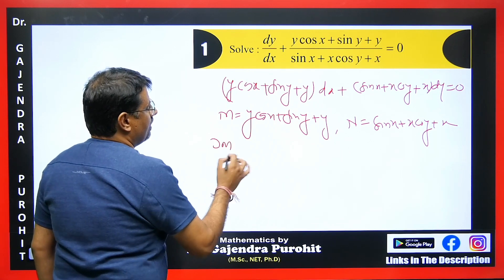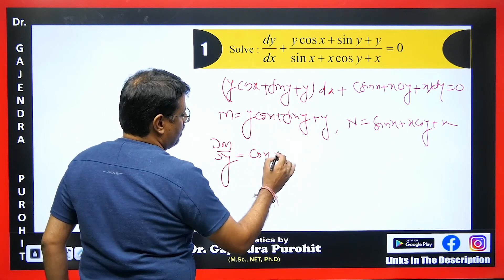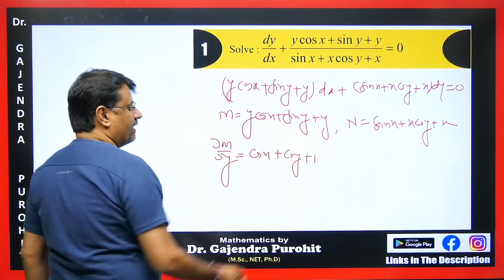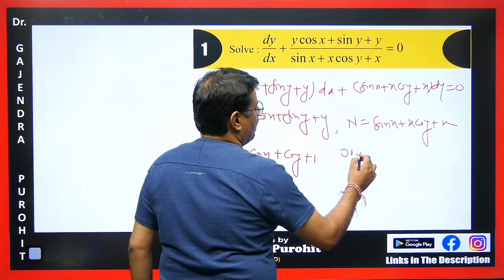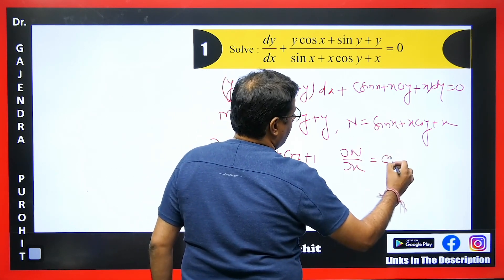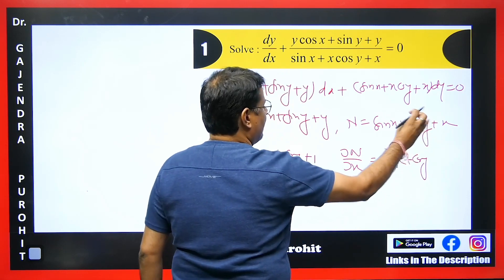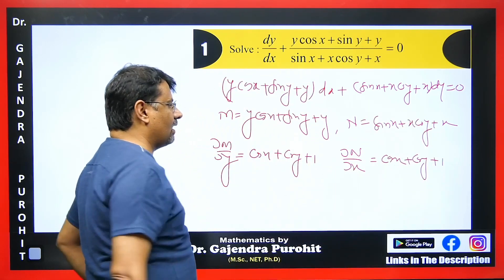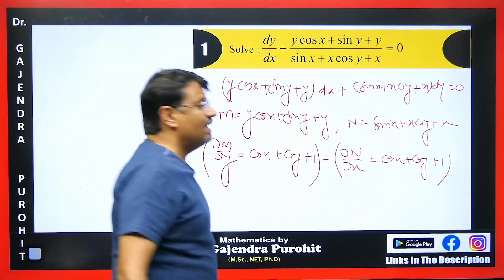Now we check del M by del y: derivative of y is 1, so we get cos x; derivative of sin y is cos y; and derivative of y is 1. Then del N by del x: derivative of sin x is cos x, derivative of x is 1, cos y is constant so x differentiates to 1. Both values are equal, so the equation is exact.